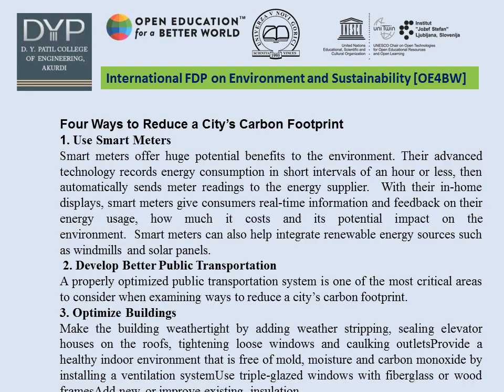Next, we move to developing better public transportation. A properly optimized public transportation system is one of the most critical areas when examining ways to reduce a city's carbon footprint. Following that, we consider optimizing buildings — making them weather-tight by adding weather stripping, sealing, and insulation on the roof. Tightening loose windows and caulking outlets provides a healthy indoor environment free of mold, moisture, and carbon monoxide. Installing ventilation systems and using triple-glazed windows with fiberglass or wood frames are also recommended.